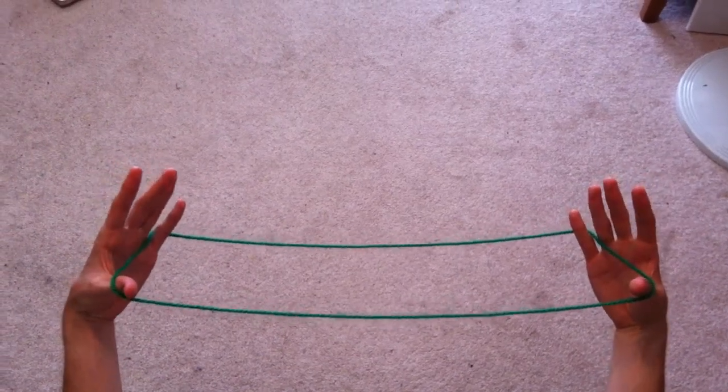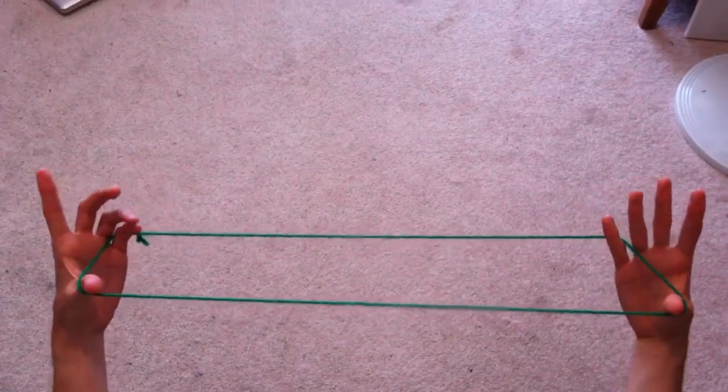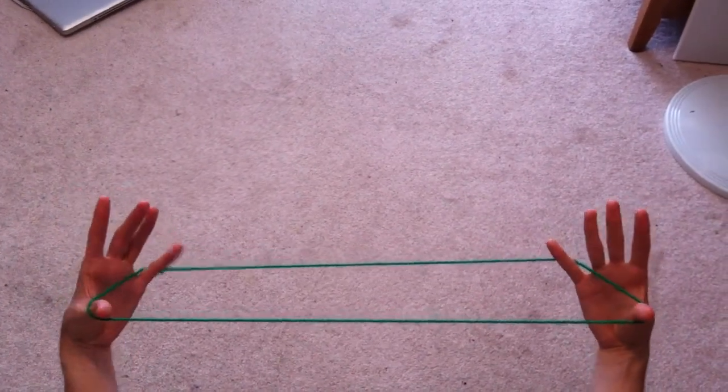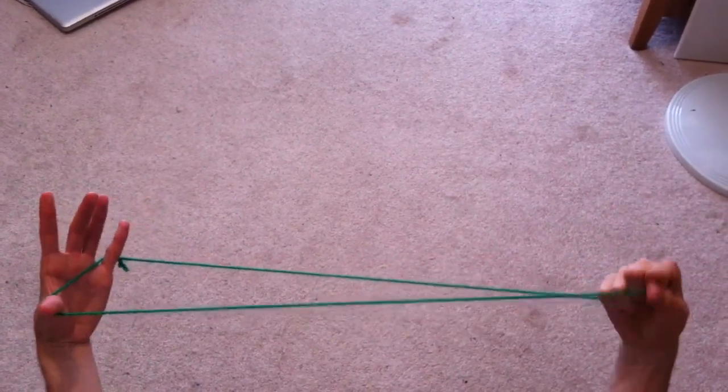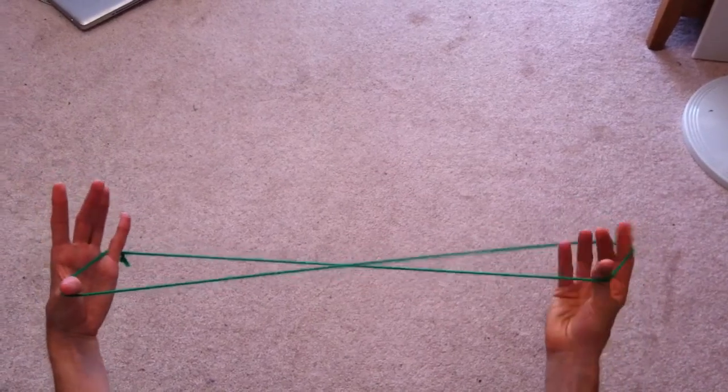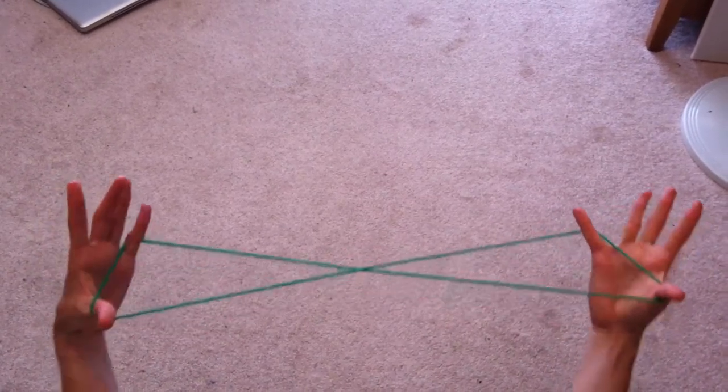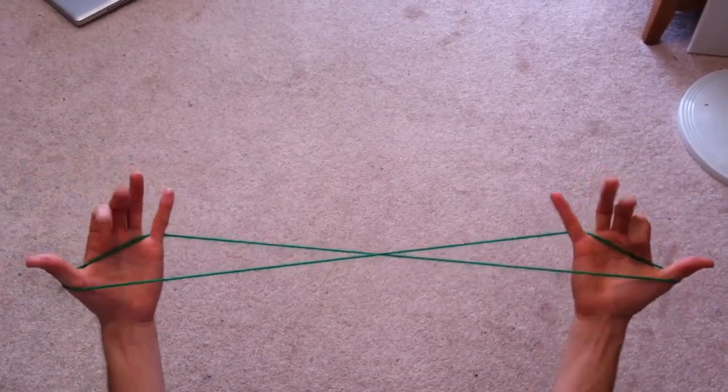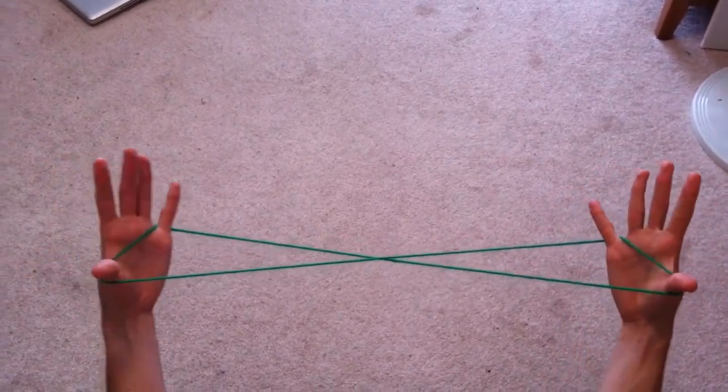This string game is called Thumb Trap, and it has a slightly different preparation at the start. Instead of the initial setup, twist the string once before you begin so it looks like an X in the middle, still with the palm string showing across your hands.